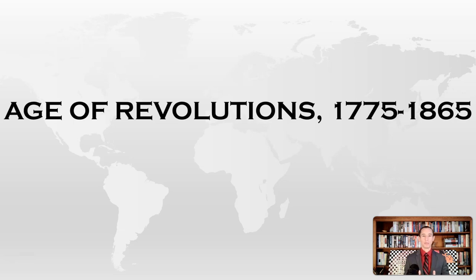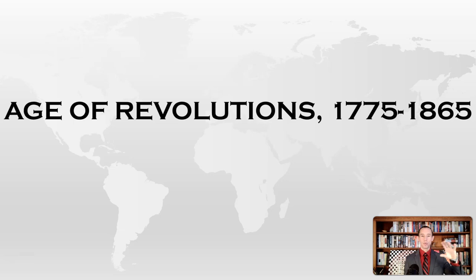Revolutions come in many forms. In general, there are three main kinds of revolutions. The first is when you just change the head of state — if you just change out the king from one king to another king, that is what the Glorious Revolution is. It's not massive changes.